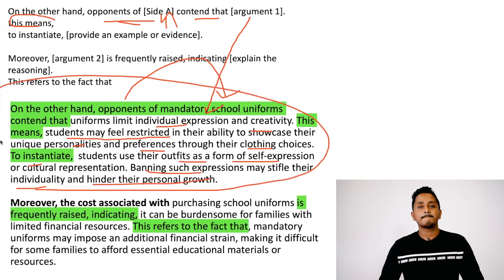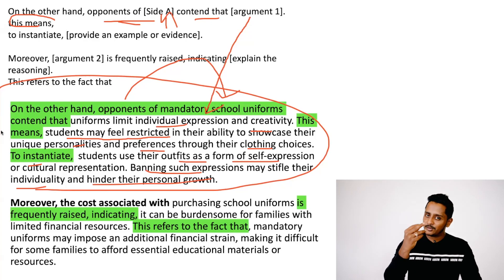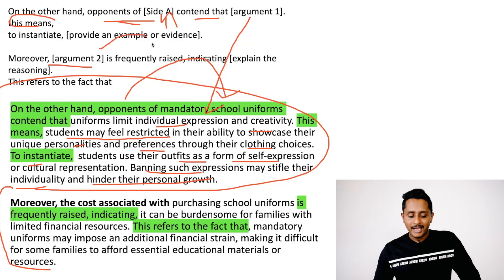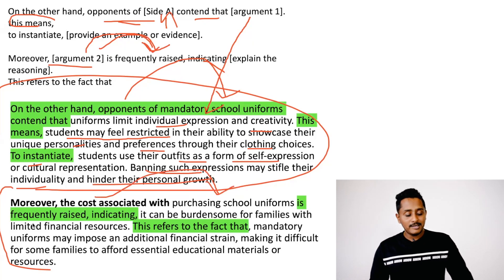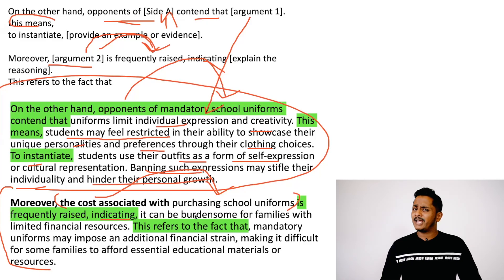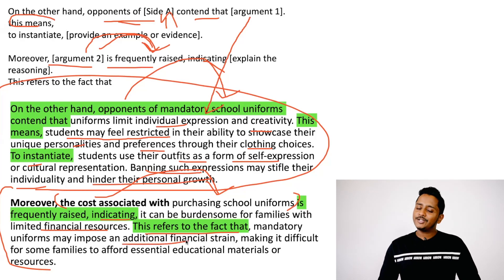That's enough — you just proved why you are against it. But if you want one more idea: 'Moreover, the cost associated with purchasing school uniforms is frequently raised, indicating it can be burdensome for middle-class or low-income families. With limited financial resources, this refers to the fact that mandatory school uniforms may impose an additional financial strain, making it difficult for some families to afford educational materials and resources.'